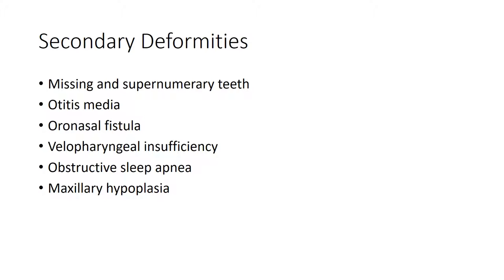In addition to looking for associated anomalies, it's really important to evaluate for secondary deformities — deformities that occur as a consequence of the cleft lip and/or palate. These include missing or supernumerary teeth, otitis media (which results from abnormal palatal musculature and soft tissues causing poor drainage from the middle ear), and oral-nasal fistula, which can occur not only as a result of the cleft but also from attempts at repair.